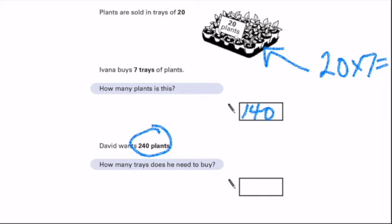Welcome back. Now, the slow way, you could count in 20s. And if you count in 20s, when you stop, that's how many trays he needs. But in reality, this is a division problem. Because what we need to do is, we need to work out how many times does 20 go into 240.